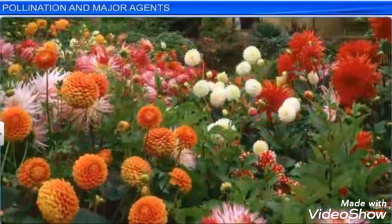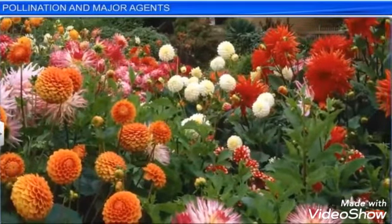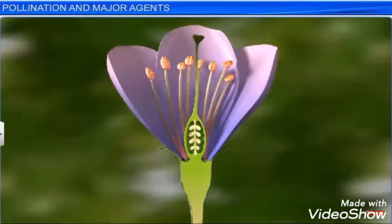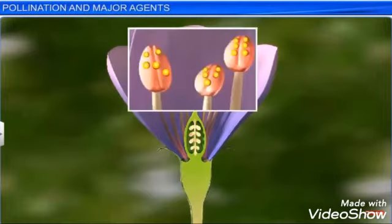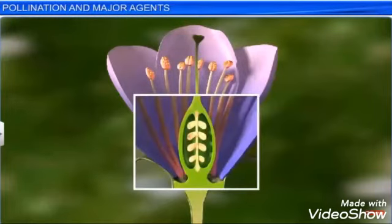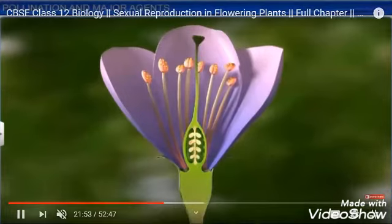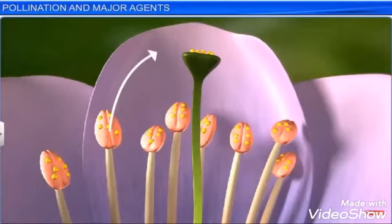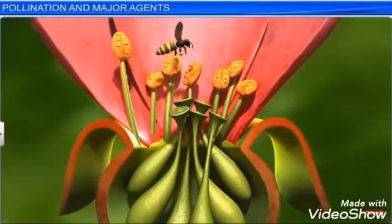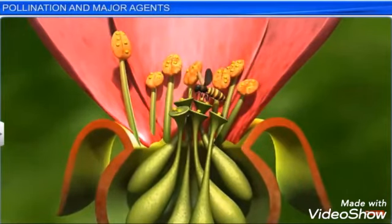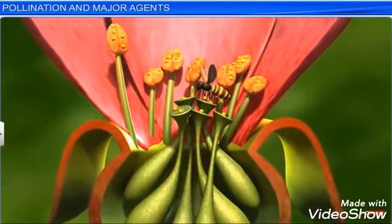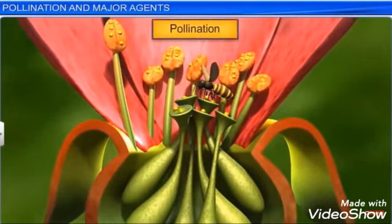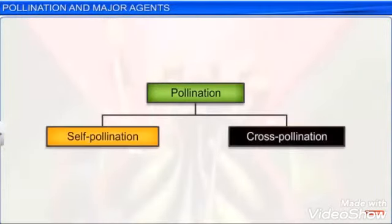Today's topic is pollination and its major agents. In nature, a large number of flowers are there having different shapes. The duty of the anther is to prepare pollen grains. These pollen grains fall on the stigma — this process is called pollination. Once the pollen grain settles on the stigma, it starts germinating, and male gametes are brought near with the help of agencies such as insects and bees, allowing fertilization to occur.